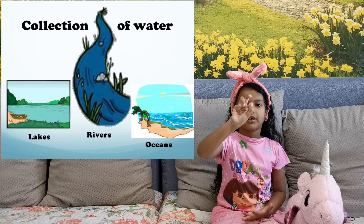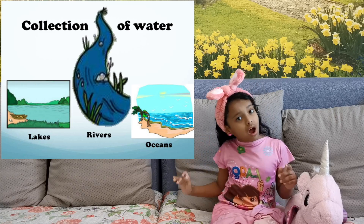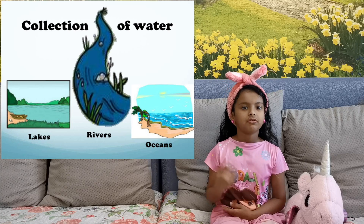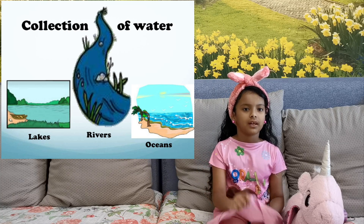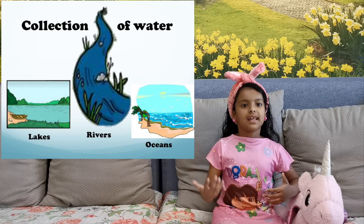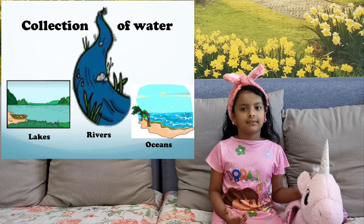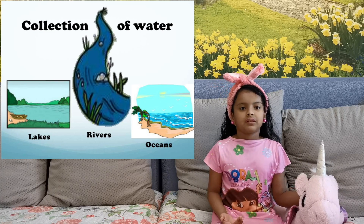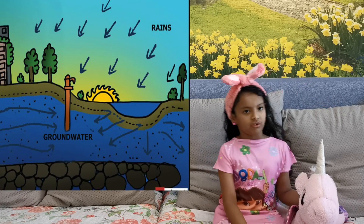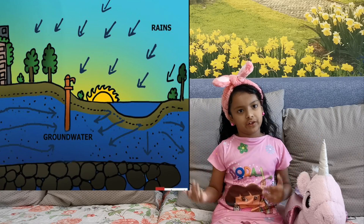Now that we've finished evaporation, condensation, and precipitation, let's move on to the last step of the water cycle. Did you know that precipitation is collected in water bodies, seas and rivers, and also it seeps through the ground as groundwater?